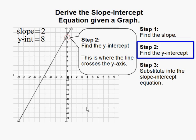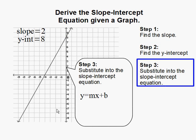Step three, substitute into the slope-intercept equation. The slope-intercept equation is y equals mx plus b. The m represents the slope, which is 2, and the b represents the y-intercept, and in this case it is 8.